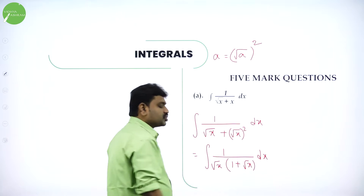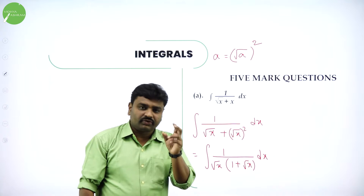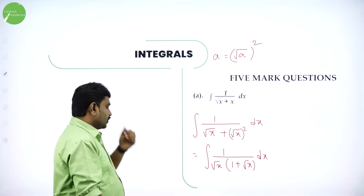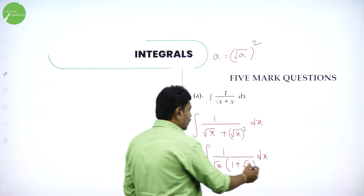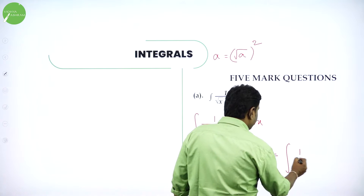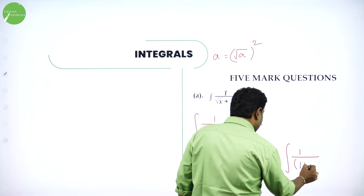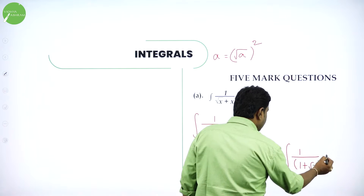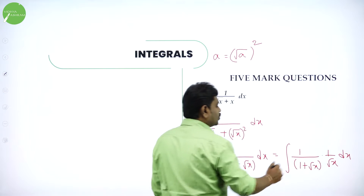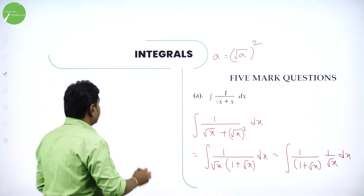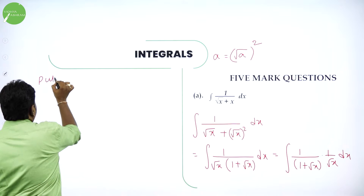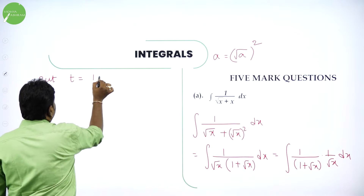Now, do the substitution. If you take part of the function as t, get the remaining part. So, further I can write the same problem as integration of 1 by, first 1 plus root x, then into 1 by root x dx. So, now we will do substitution. Whatever is present in the bracket, take it as t. Put t equal to 1 plus root x.